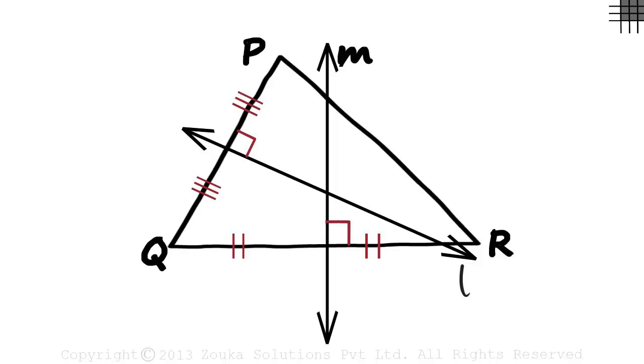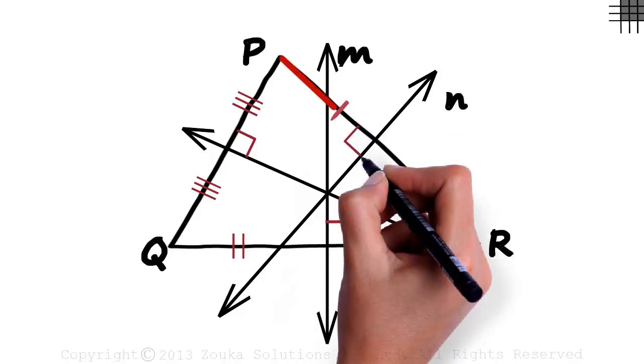Now we have to see if the perpendicular bisector of segment PR passes through this point. Let line N be the perpendicular bisector of segment PR and yes, it passes through the same point. This side will equal this side and line N will be perpendicular to PR.